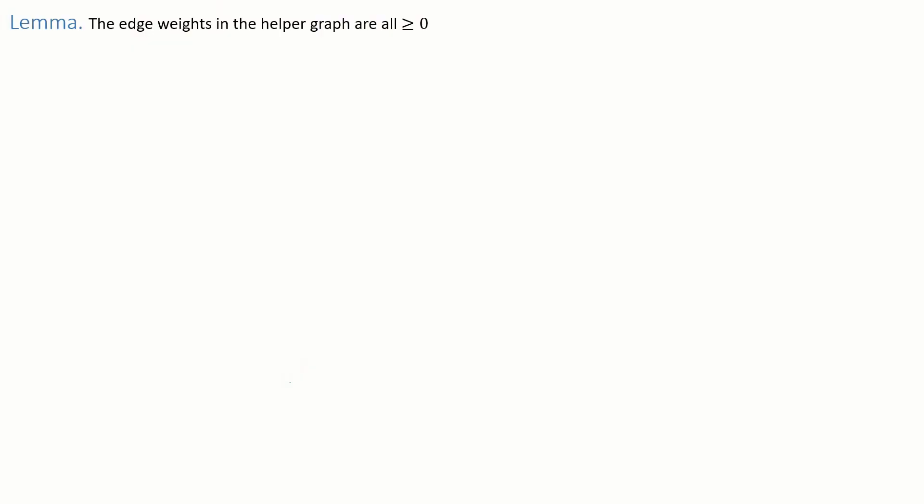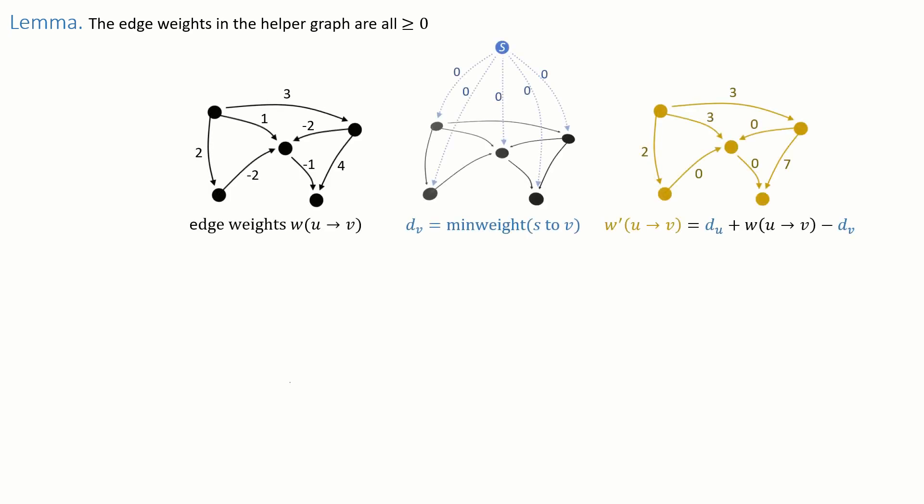First, let's prove the result about weights in the helper graph. This is what we want to prove: that the edge weights in the helper graph are all above or equal to zero. Let's just remind ourselves what the helper graph is and how its weights are defined.